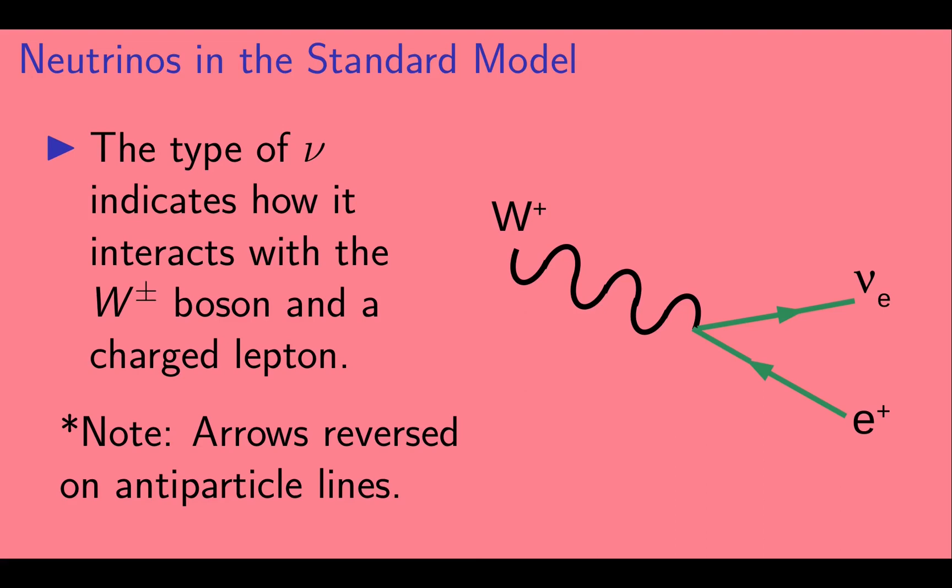For example, here we have a positively charged W plus boson. It can decay into a positron, which is the antiparticle of the electron and labeled here as an E plus, and an electron neutrino. I should note here that we've used the convention that arrows are reversed on antiparticle lines. As the positron is the electron's antiparticle, it is drawn with its line reversed.